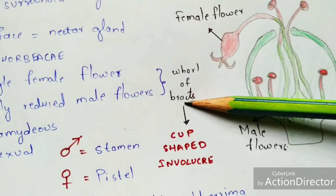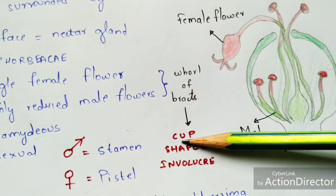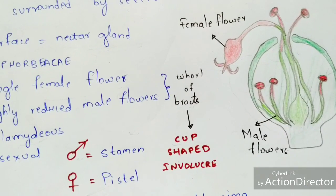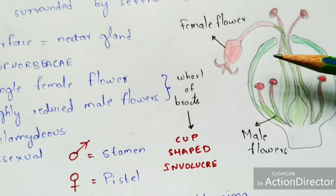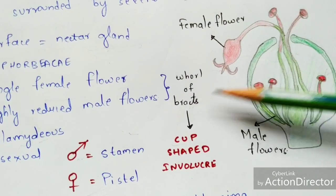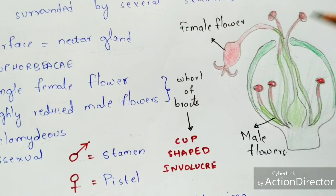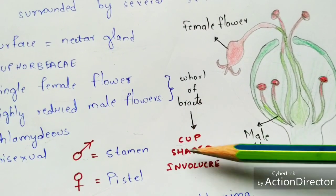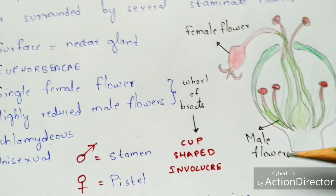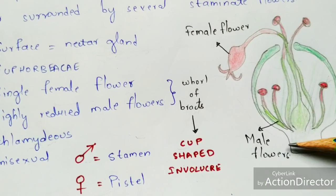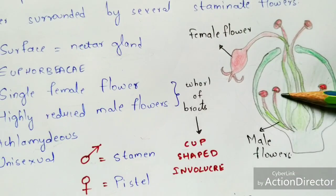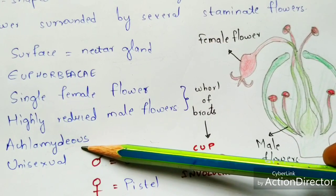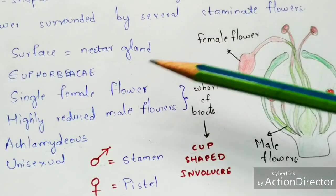These bracts get fused with each other and form a cup-shaped involucre. Before this stage, bracts are present individually and then they fuse to form the cup-shaped involucre. Within this cup-shaped involucre, female flowers as well as male flowers are present inside it.